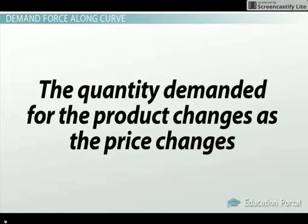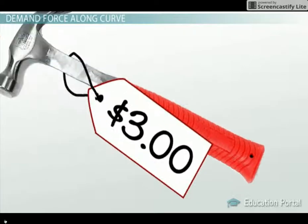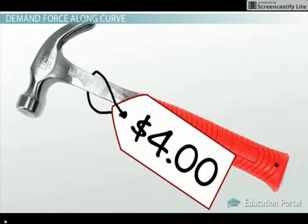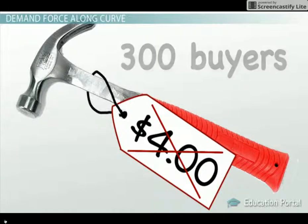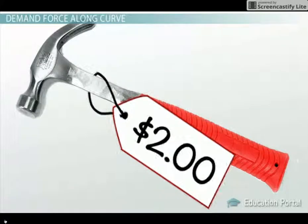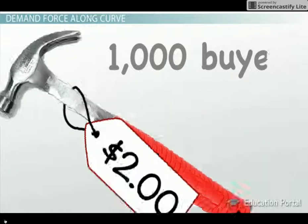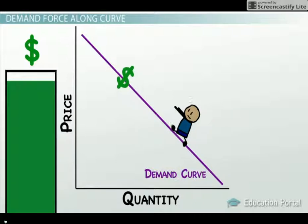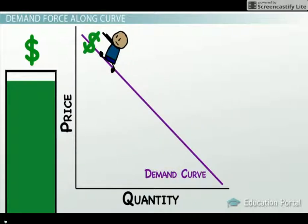Let's look at a quick example to illustrate this market force. If a hammer is sold at $3, it might have 500 buyers. However, if the hammer manufacturer or seller were to change the price to $4, then the hammer might have only 300 people interested in buying it. On the other hand, if the seller were to drop the price to $2, then the hammer might have 1,000 buyers at that price point. These changes in price all represent movements along the demand curve. As the price changes, natural market forces cause more or less people to see the hammer as affordable or a good deal. Each price change results in quantity demanded going up or down for the product.